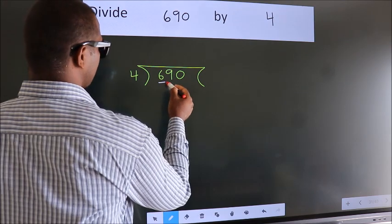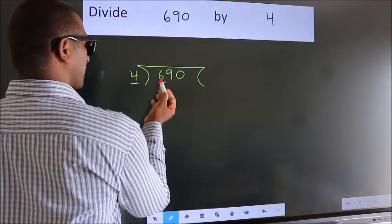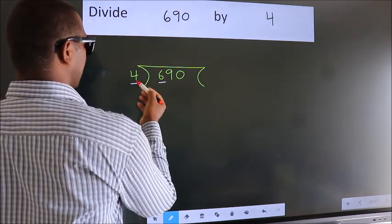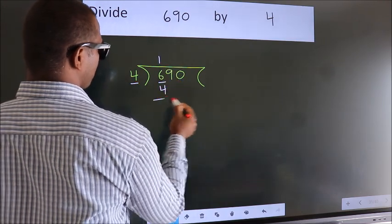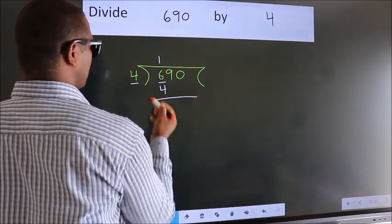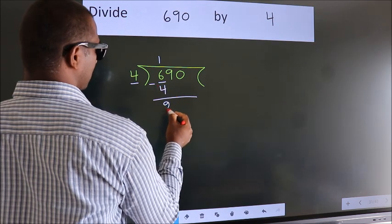Here we have 6, here 4. A number close to 6 in the 4 table is 4 once, which is 4. Now we should subtract. We get 2.